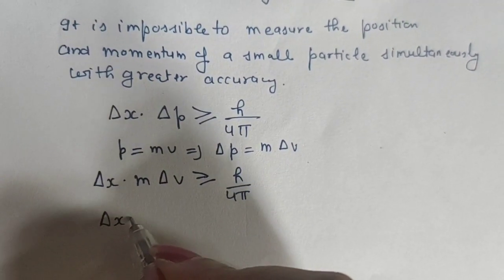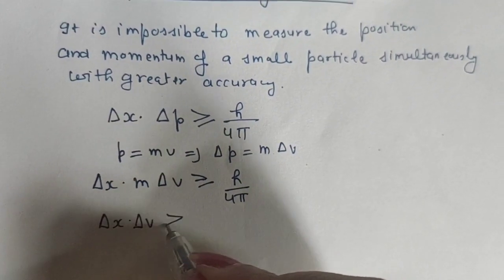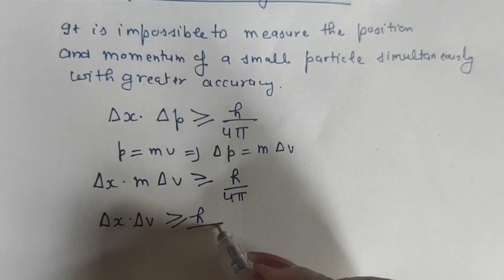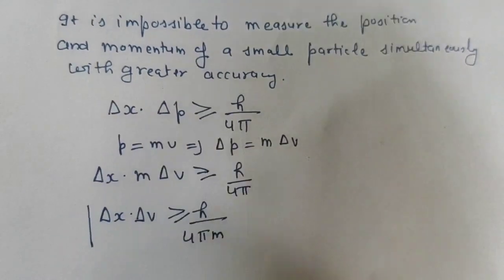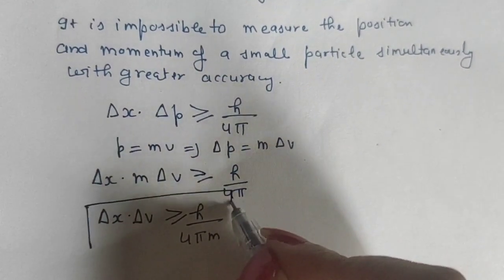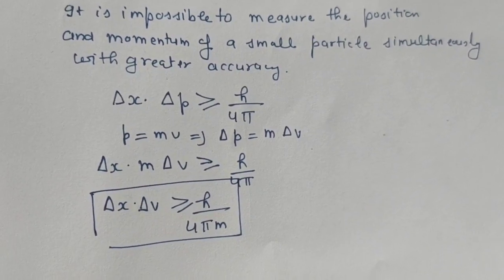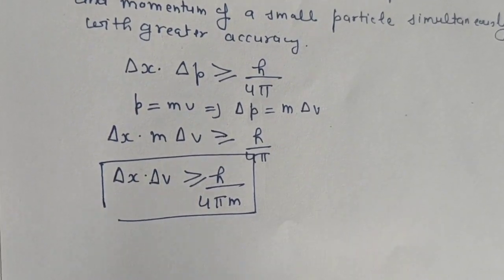Rearranging with Δx and Δv on one side and constants on the other, the formula becomes Δx·Δv ≥ h/4πm. That is the mathematical formula for Heisenberg's Uncertainty Principle.